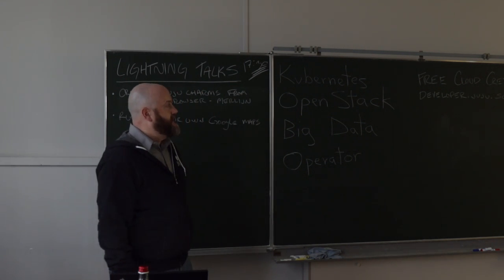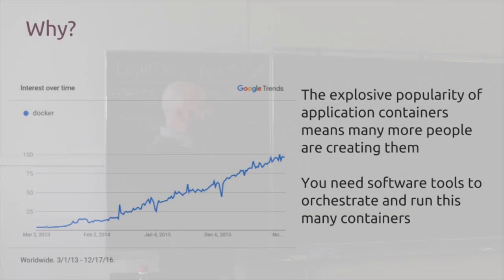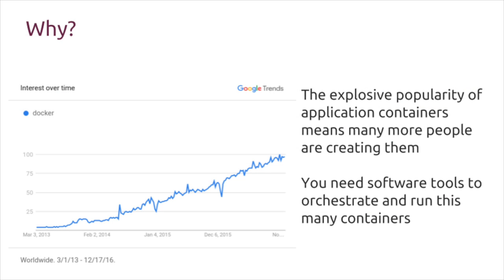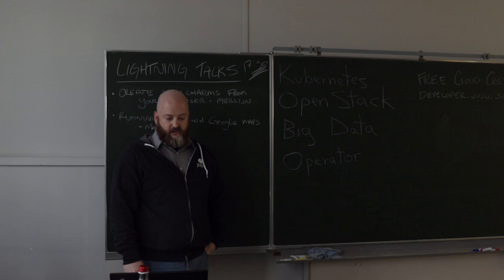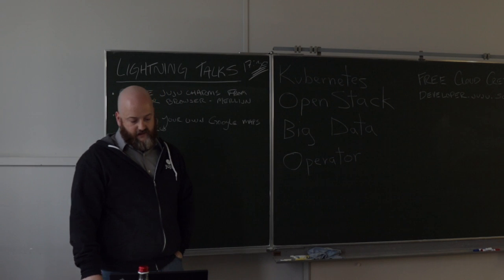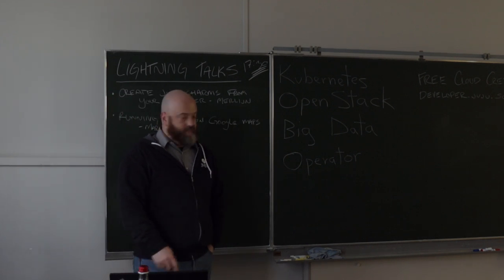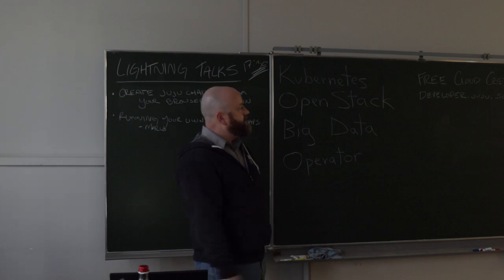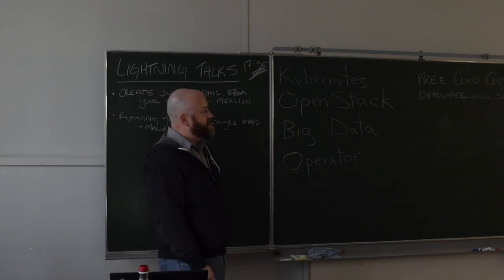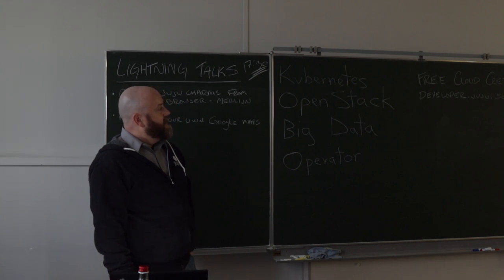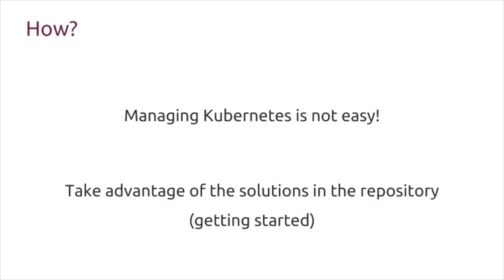Why are we talking about Kubernetes? Because of the explosive popularity of containers — people are using them a lot more, breaking up monolithic applications into many multiple containers. So you need software to manage those things. There are different container technologies: Docker, LXD, Rocket, etc. Because of the popularity, we need a way to coordinate them. This is a graph of interest over time since the inception of Docker. Managing Kubernetes is not necessarily easy — we're not talking about just installing it, but managing it over its lifetime.